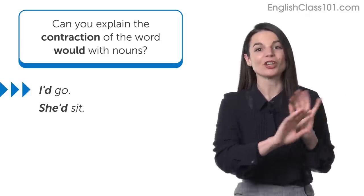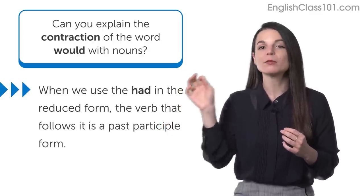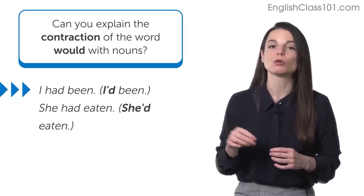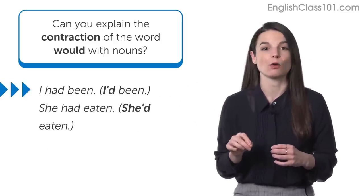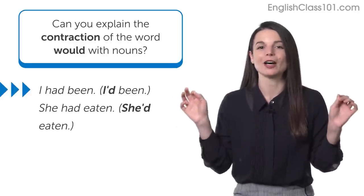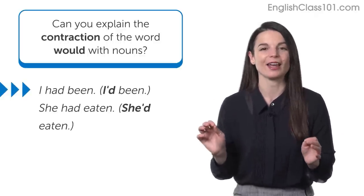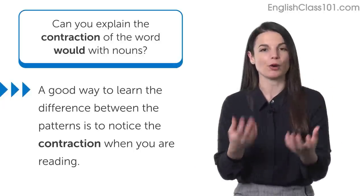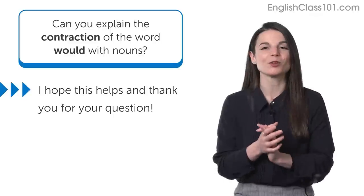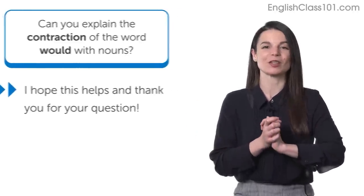The base form of the verb means there's no change. On the other hand, when 'had' is used in the reduced form, the verb that follows is in the past participle — like 'I had been' or 'she had eaten.' So the verb after the contraction is the hint telling you which form of apostrophe-d you're looking at. This may take a little time to get used to, especially in speech, but it will become more natural with practice. A good way to practice is to watch out for this contraction when reading. I hope this helps you understand how to use apostrophe-d for 'would' and 'had.' Thanks for an interesting question.